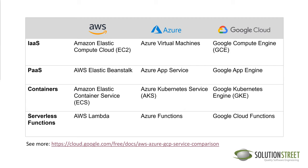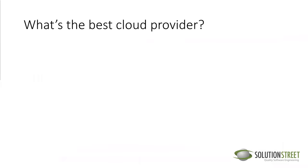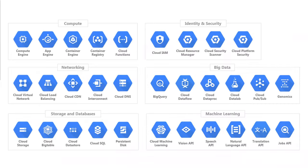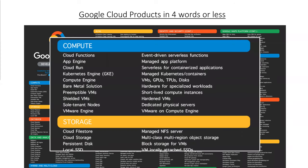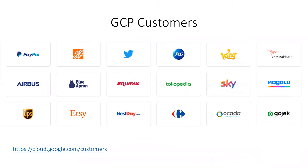Someone noted you basically need a certification to understand what AWS product names mean. Let's move on — here are some GCP customers: PayPal, Home Depot, Twitter, and others. You can go to cloud.google.com/customers to see how GCP is helping these customers.